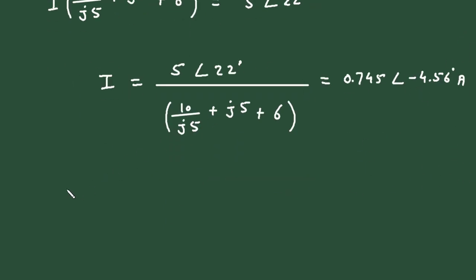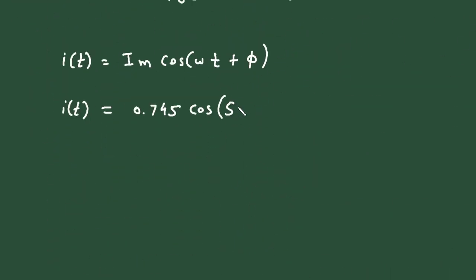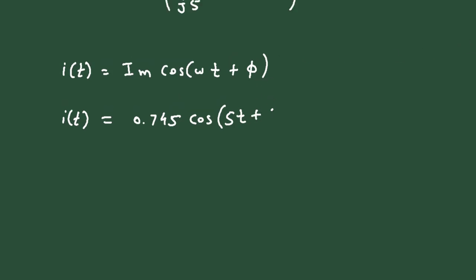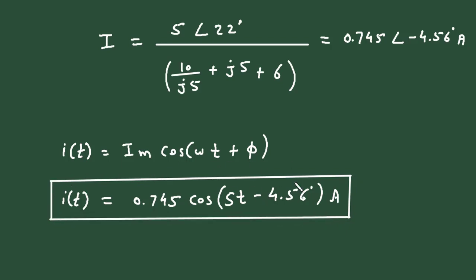Now, we can convert this into time domain format. So, I of t is equal to I m cos omega t, I m cos omega t plus phi. So, therefore, I of t is equal to, I m value is this value, 0.745 cos omega value is, here we can see omega value is 5. So, 5 t plus phi value is, here we can see phi value is, minus 4.56, minus 4.56 degree. And since it is current, so, its unit will be ampere. So, this is how we can find current in time domain format.